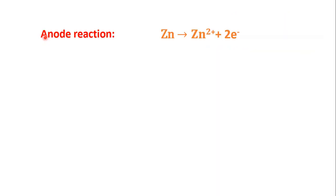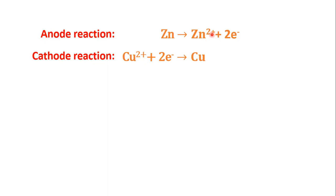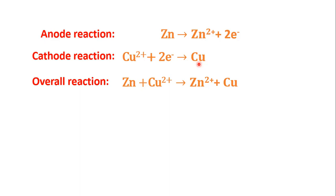Now we can put these together. The reaction at the anode is loss of electrons: zinc dissolves as Zn²⁺ goes into solution. The reaction at the cathode is Cu²⁺ in solution taking up the two electrons that came through the external circuit, becoming neutral copper — gain of electrons is reduction. Adding the two half-reactions and canceling the two electrons, the overall reaction is: Zn + Cu²⁺ → Zn²⁺ + Cu.